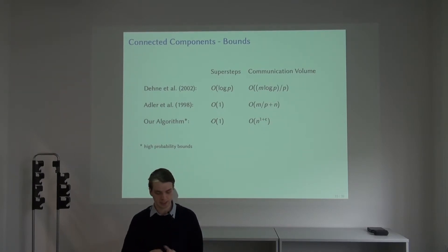We have very few super steps and the communication volume is good if the graph is dense. It does not increase with the density of the graph. This comes from the fact that we only treat very sparse subgraphs as we will see later.